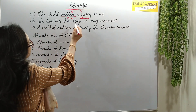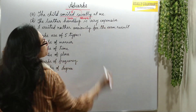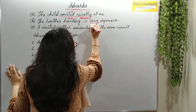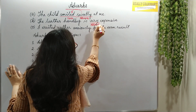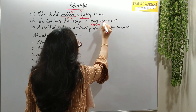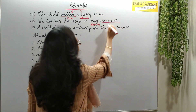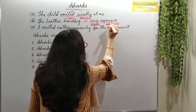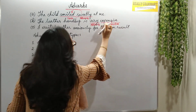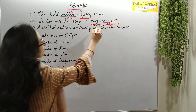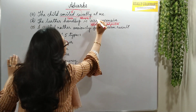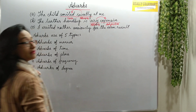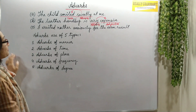The leather handbag is very expensive. Here, very is an adverb and expensive is an adjective. This adverb very modifies the adjective expensive.